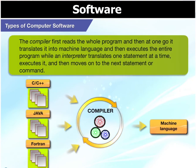The difference is that a compiler first reads the whole program, translates it into machine language at one go, and executes the entire program. While an interpreter translates one statement at a time, executes it, and then moves on to the next statement or command.